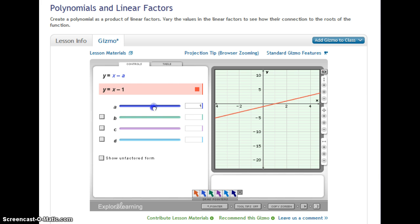We know we need x minus 1 as one linear factor. To add another, I need to add another slider for b. So we want that to be at x plus 1.